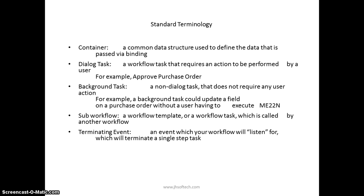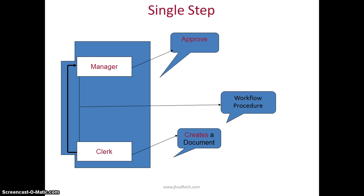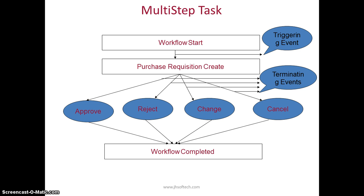A background task is an indirect task that does not require any user action — for example, it could update a field on a purchase order without a user having to execute a transaction. A sub-workflow is a workflow template or workflow task that is called by another workflow. A terminating event is an event which the workflow listens for to terminate a single step task. A single-step task involves sending or creating a document for a manager to approve. A multi-step task includes approve, reject, change, and cancel options, each leading to different subsequent tasks.